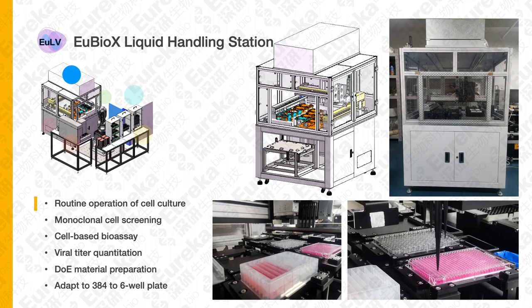To increase the scale and accuracy of screening, we built our own automation facility, EU-BioX. It can perform routine operations of cell culture, monoclonal cell screening, cell-based bioassay, viral titer quantitation, and DOE material preparation, and it has been adapted to 384- to 6-well plates. With this, we can screen over 10,000 individual cell clones per round of screening experiments.